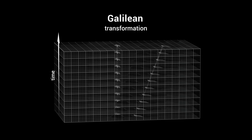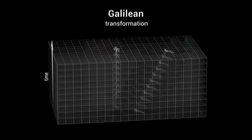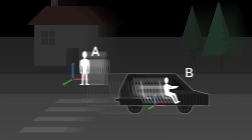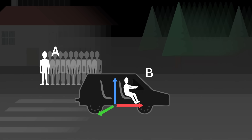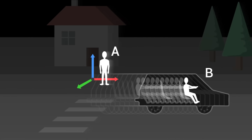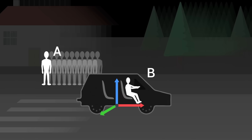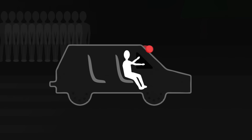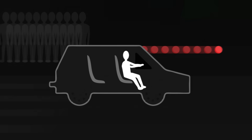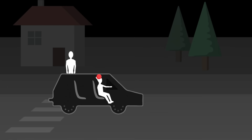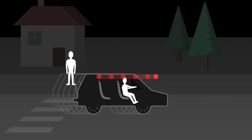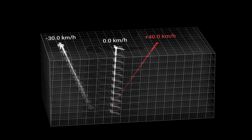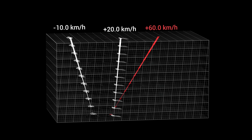Physicists understood as early as the 17th century that motion depends on the observer. For A, B is in motion, but for B, it is A who moves. Neither of these two statements is more valid than the other — motion is relative. If B decides to throw a ball, the speed of the ball will seem faster for A since it is moving with the car. According to Galileo, we can add up velocities to change reference frames.